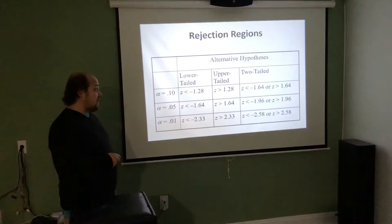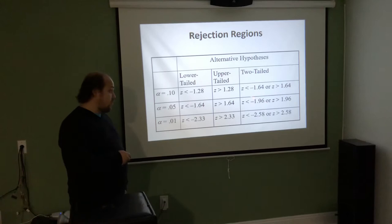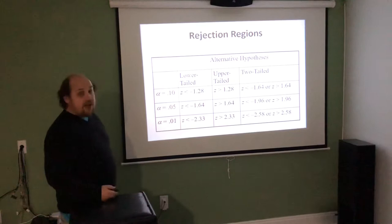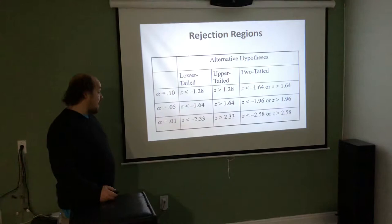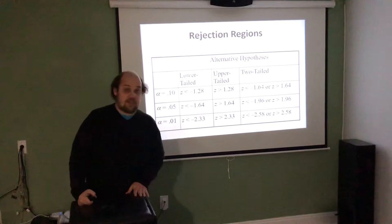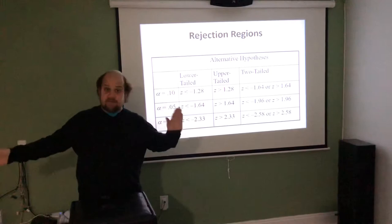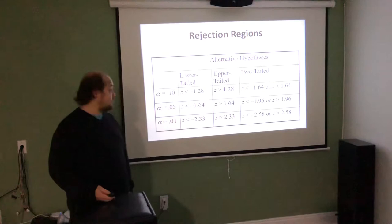For a right-tail (greater than) test, you need z > 1.28. For a two-tailed test, the test statistic must be either less than −1.64 or greater than +1.64. This table walks through values for other confidence levels: 95% confidence uses alpha = 0.05; 99% confidence uses alpha = 0.01. The two-tailed values match the z-alpha/2 values from confidence intervals, because in both cases we're looking at both sides of the distribution.